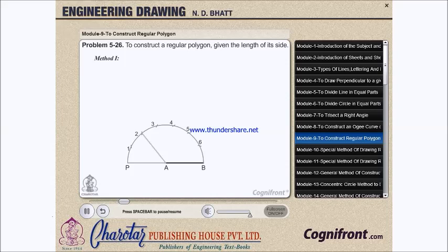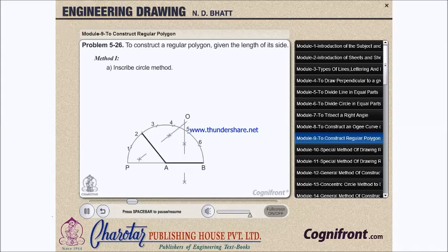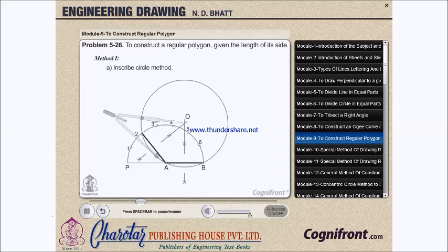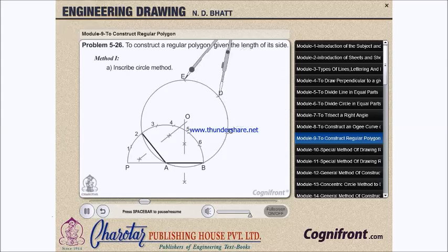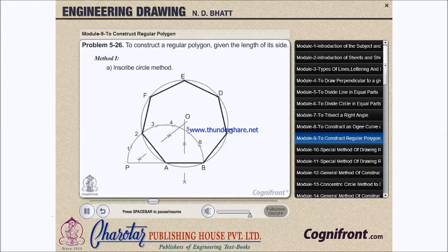Draw a line joining A with the second division point 2. Inscribed circle method: draw perpendicular bisectors of A2 and AB intersecting each other at O. With center O and radius OA, describe a circle. With radius AB and starting from B, cut the circle at points C, D, etc., up to 2. Draw lines BC, CD, etc., thus completing the required heptagon.